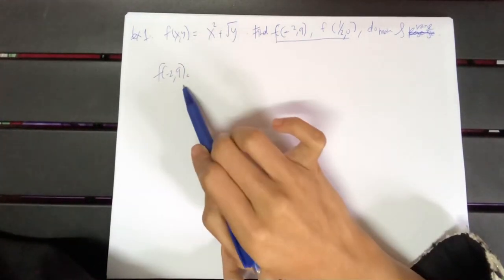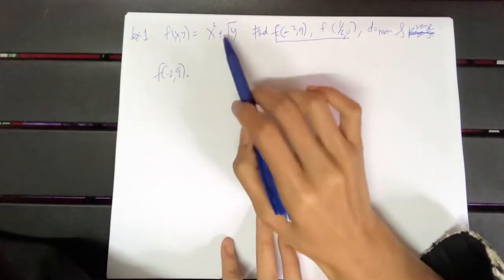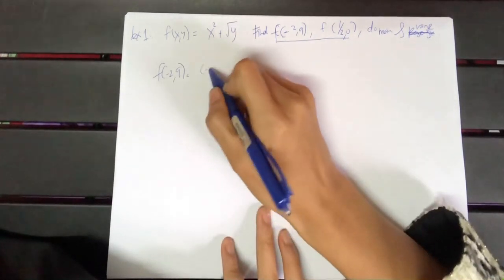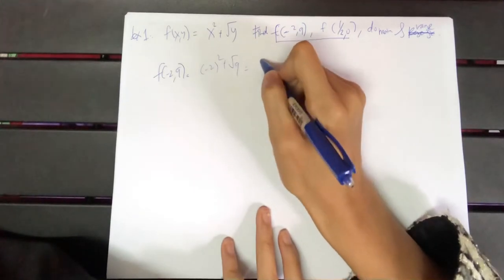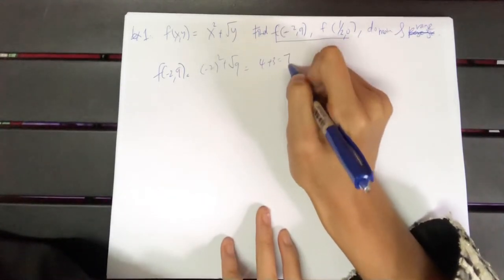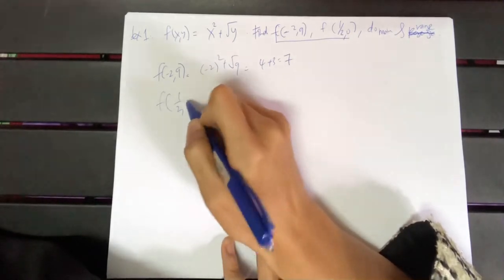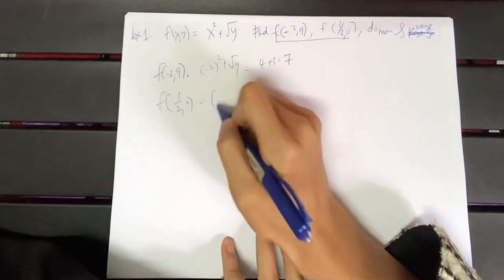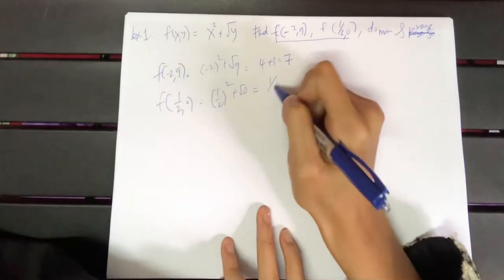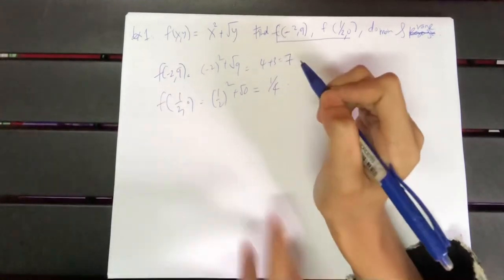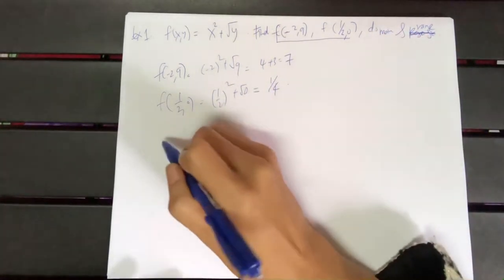For f(-2, 9): the first value is x and the second is y. Substitute into the function: (-2)² + √9 = 4 + 3 = 7. For f(1/2, 0): (1/2)² + √0 = 1/4 + 0 = 1/4. Done.